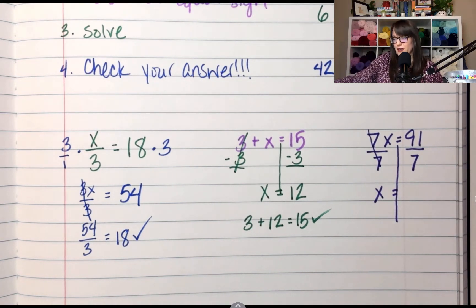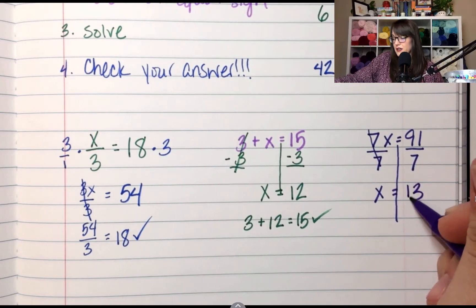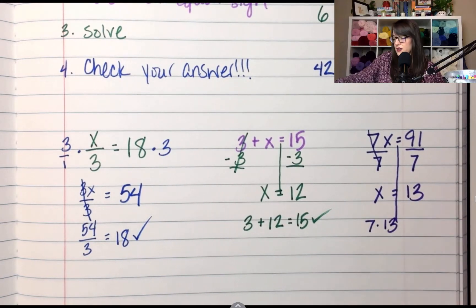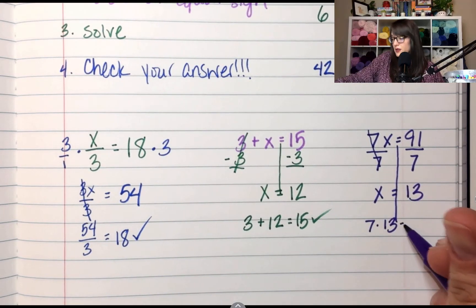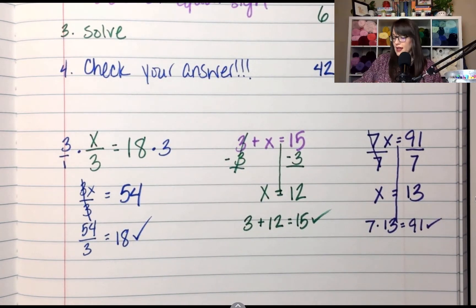What is 91 divided by 7? 13. Now let's check. What is 7 times 13? It is 91, so that one's right.